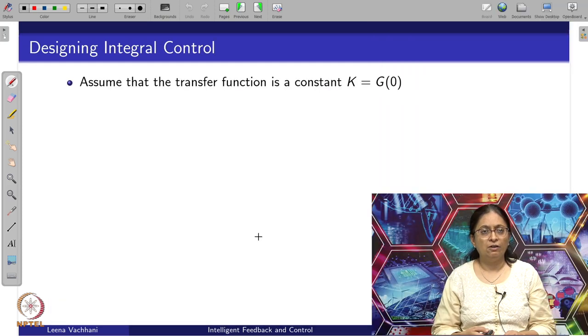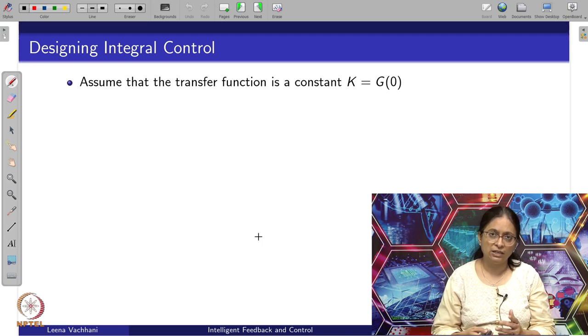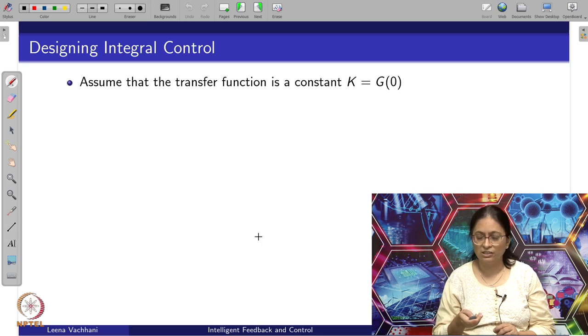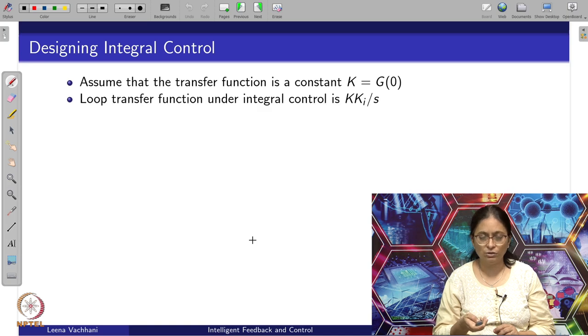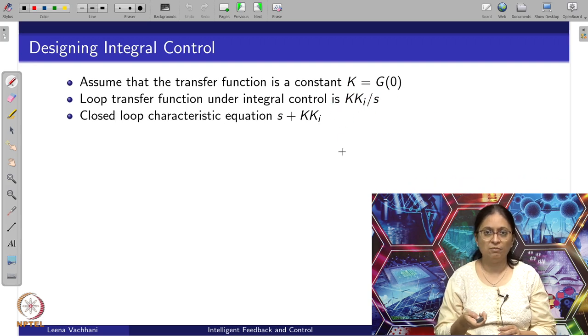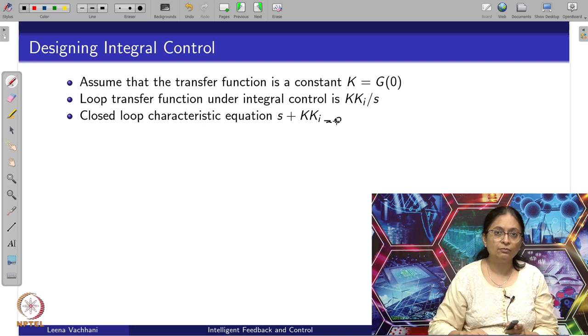Giving another example of designing integral control in a simplistic manner. Integral control is more effective when we have to apply it on faster dynamical systems. For such systems, my transfer function is a simple first order system and its gain is given by constant K, which is G at S equals 0. The loop transfer function under integral control can be given by K times KI divided by S, because my integral control is KI by S. The corresponding closed loop characteristic equation is given by S plus KKI equals 0.